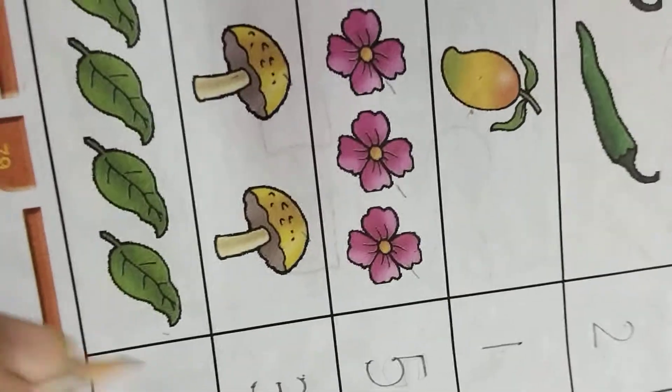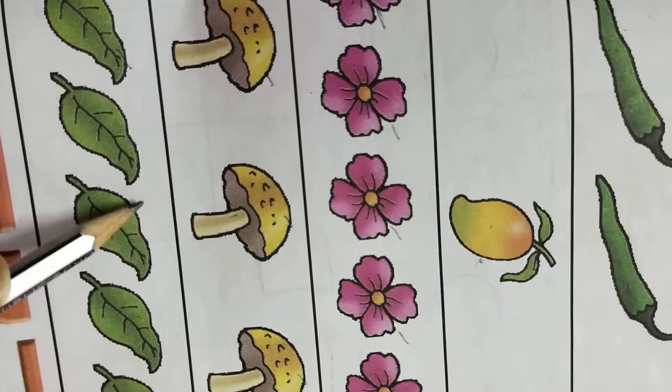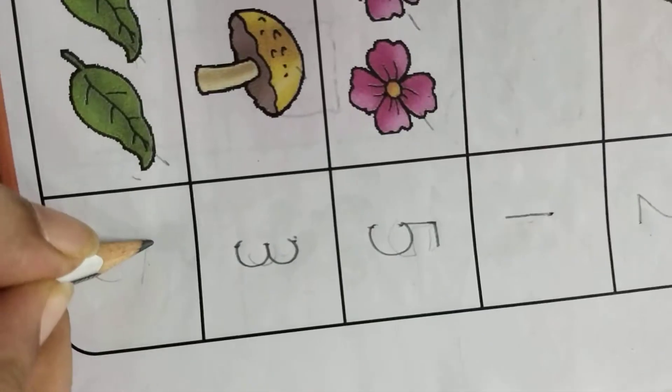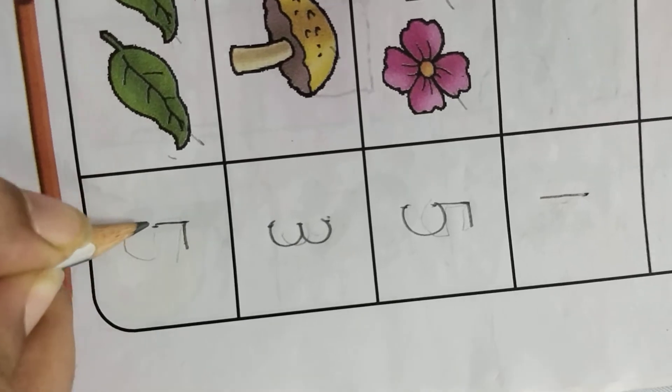Count this. How many leaves are there? One, two, three, four, five. Okay. So you can write it with the help of a dot or without a dot. It is your own choice.